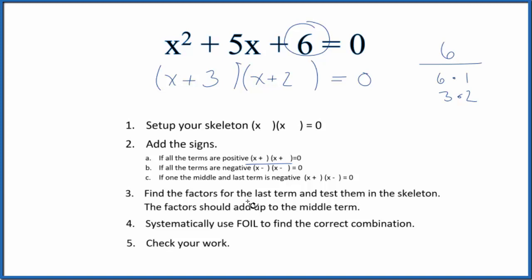We should check this using the FOIL method here. First, outside, inside, last. When we do that, we have the first term. That's x times x, x squared, plus the last term. x times 2 is 2x, plus inside, that's 3x, plus the very last term, 3 times 2 is 6.